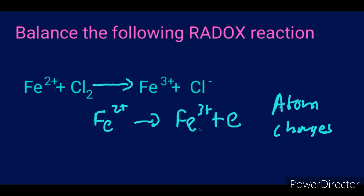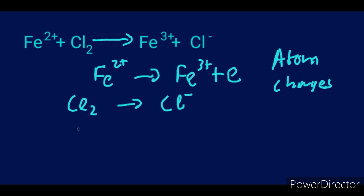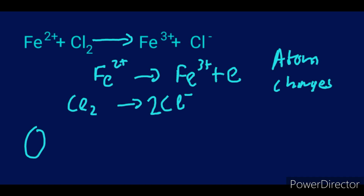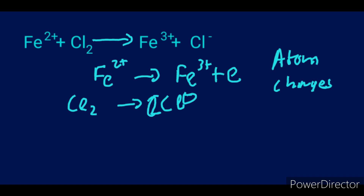Now let's deal with the second pair: Cl₂ becomes Cl⁻. Balance the atoms first — there are two chlorines on the left but only one on the right, so we add a coefficient of 2 on the right to get 2Cl⁻. Now balance the charges: Cl₂ is a pure compound so its charge is zero; 2Cl⁻ has a total charge of −2. Zero is higher, so we add 2 electrons to the left side.